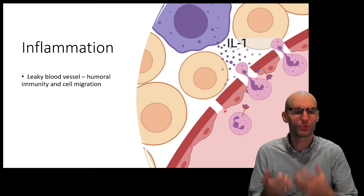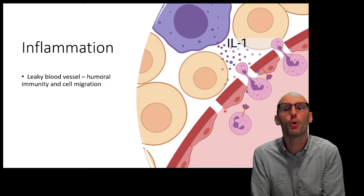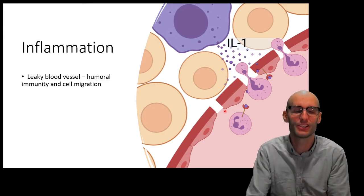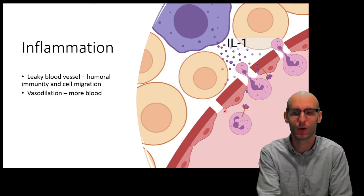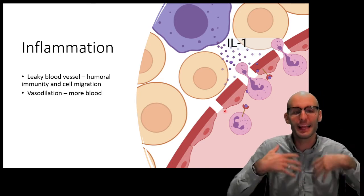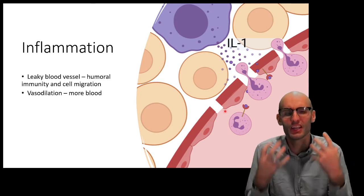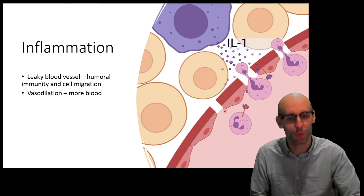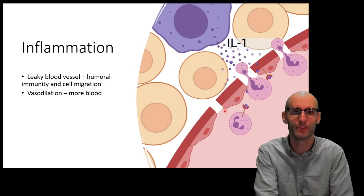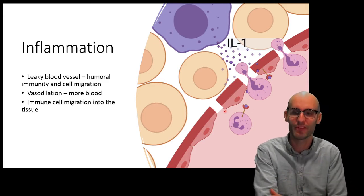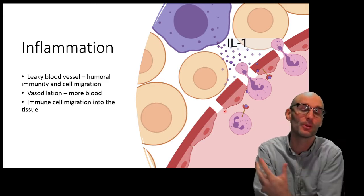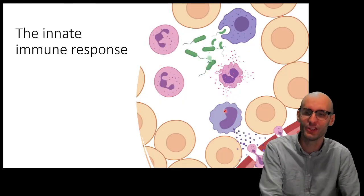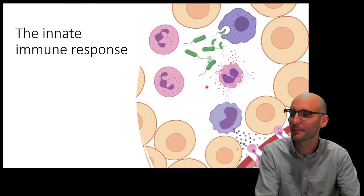The leaky blood vessels let humoral immunity like complement proteins and antibodies into the tissue, and also facilitate cell migration. Vasodilation increases blood flow — we need more oxygen, more nutrients, and more cells going to that site of infection or injury. So we need that vasodilation, and we need those immune cells to go in and start to clean up the pathogen or tissue damage.